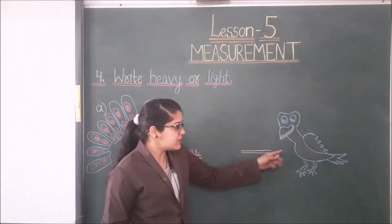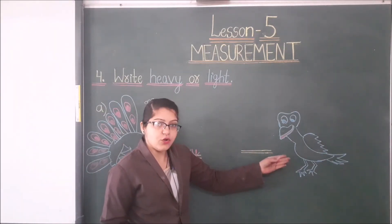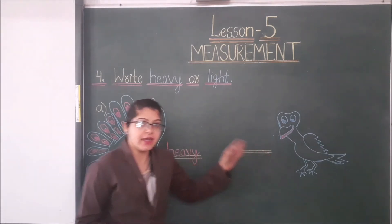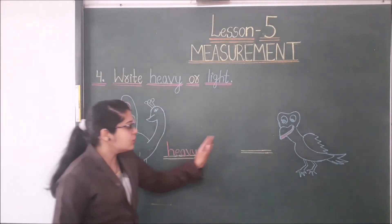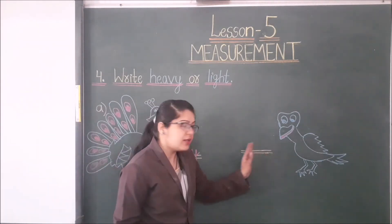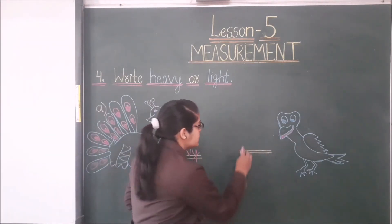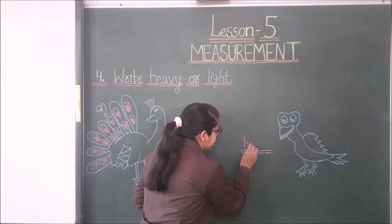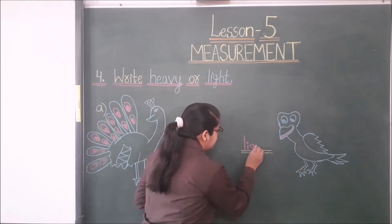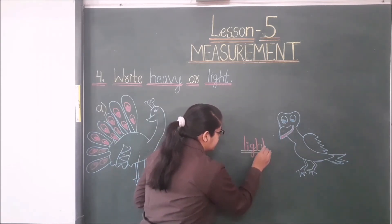Crow is lighter than a peacock, so crow is light. Here we write 'light' — L-I-G-H-T.